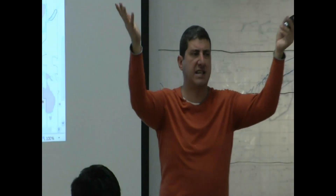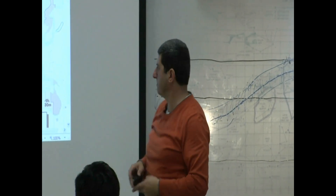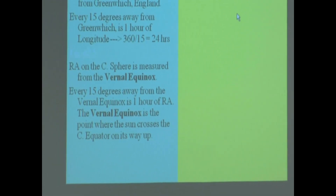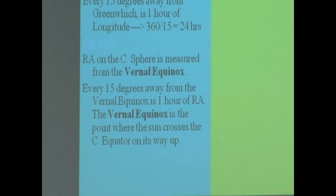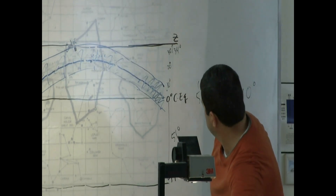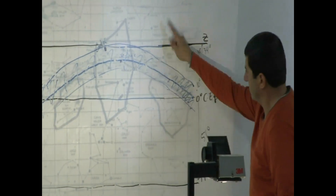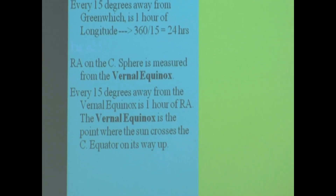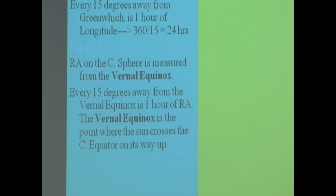RA on the celestial sphere is measured from the vernal equinox — this is zero hour longitude on the celestial sphere. One hour, two hours, three hours, four, five, six, and so on. Every 15 degrees away from the vernal equinox is one hour of RA.